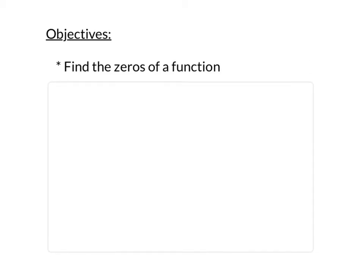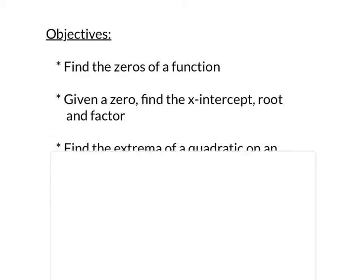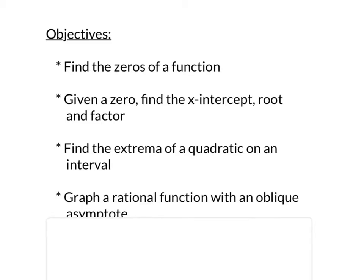Here we are with intro number 8. There are a few things we want to be able to do today: first, find the zeros of a function; once we have those zeros, be able to state the x-intercept, root, or factor; find the extrema of a quadratic on an interval; and graph a rational function with an oblique asymptote.